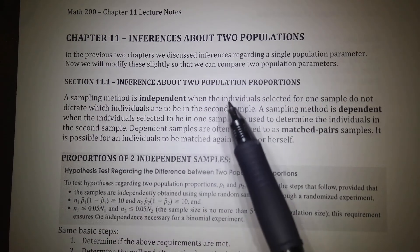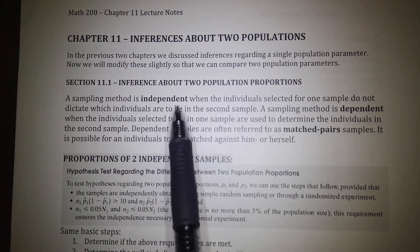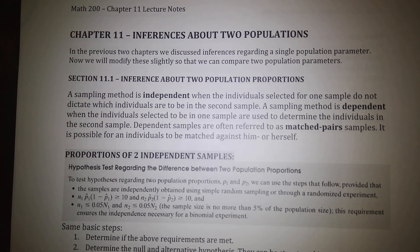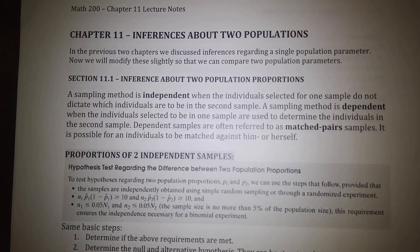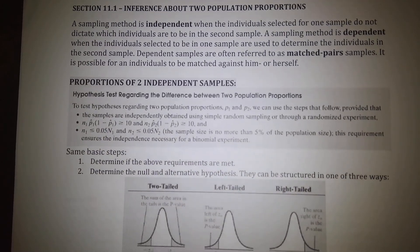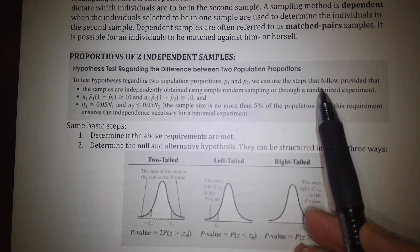In the first section we're going to talk about how to compare two different population proportions. A sampling method is called independent when the individuals selected for one sample do not dictate which individuals are to be selected in the second sample. A sampling method is dependent when the individuals selected for one sample are used to determine the individuals selected in the second sample. Dependent samples are often called matched pairs samples. It is possible for an individual to be matched against themselves — for example, your weight before and after a diet would be matched pairs. It wouldn't make sense to compare your weight before a diet with Joe's weight after the diet.